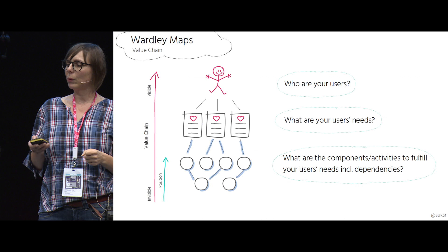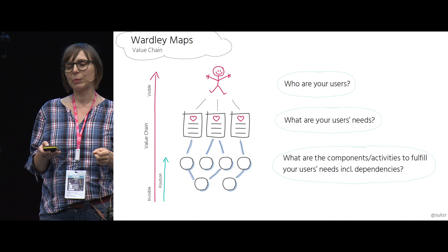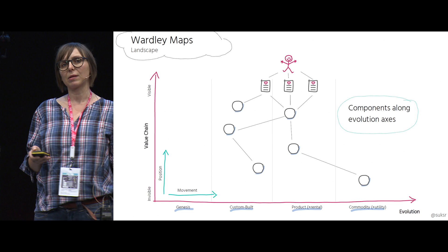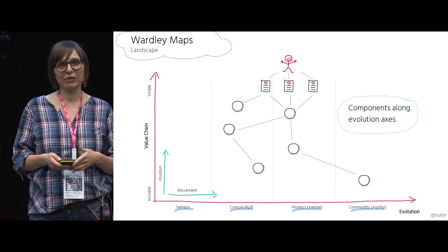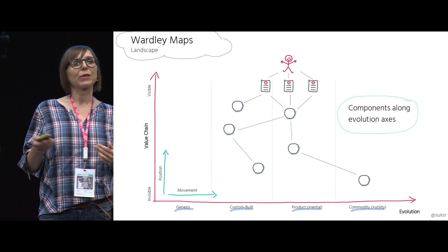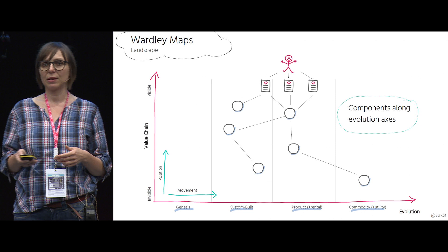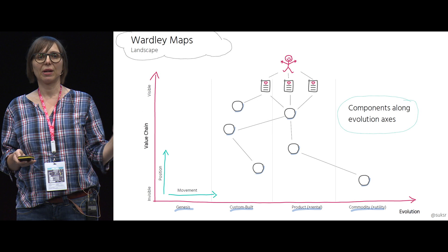We take this value chain — after identifying it and listing all the dependent components — and plot it along the evolution axis. The evolution axis goes from left to right: from Genesis, these are brand new things that have never existed before, to Custom-Built, to Product and Rental — off-the-shelf products and open-source software — and Commodity and Utility on the right. The movement of a component along the x-axis is determined by its stage of evolution.